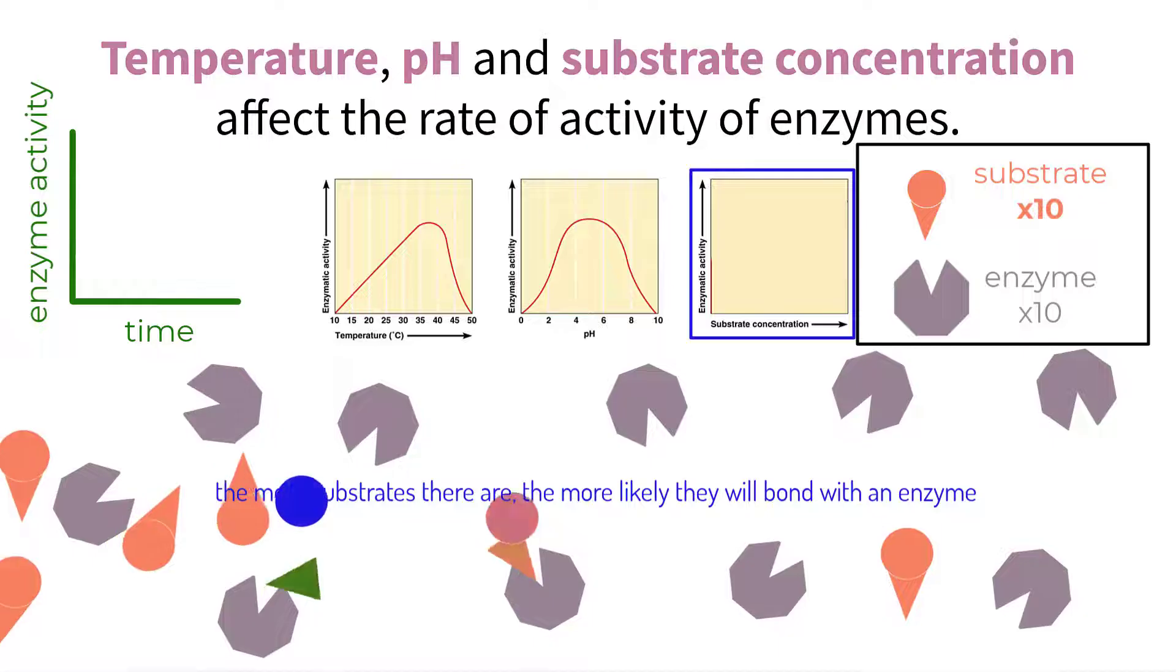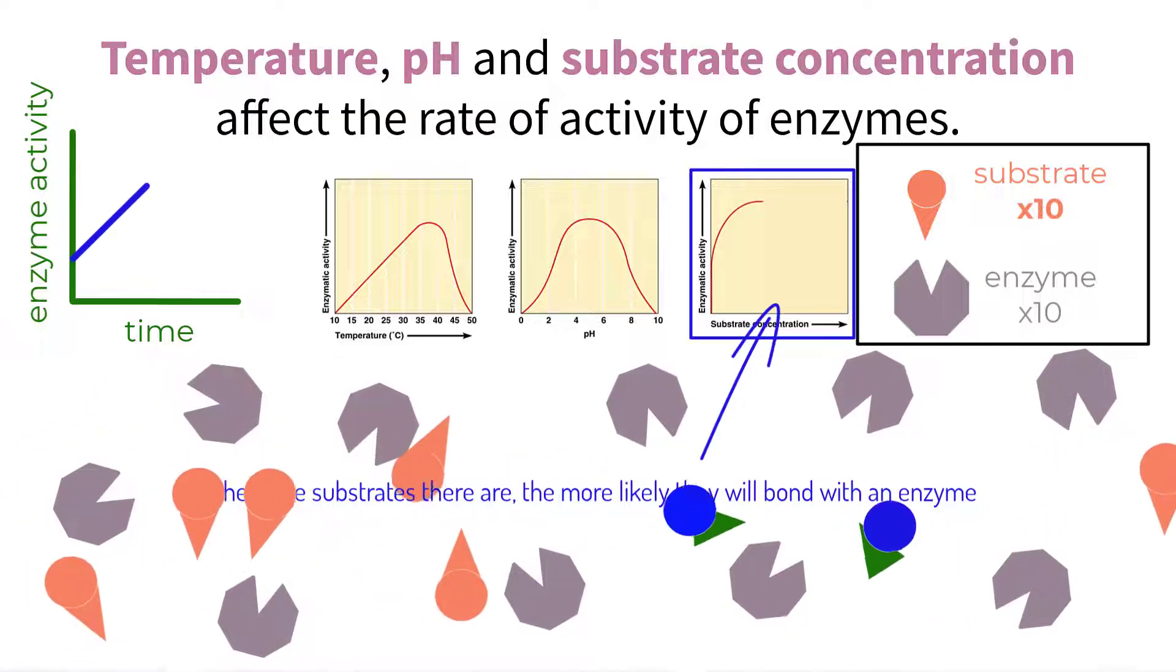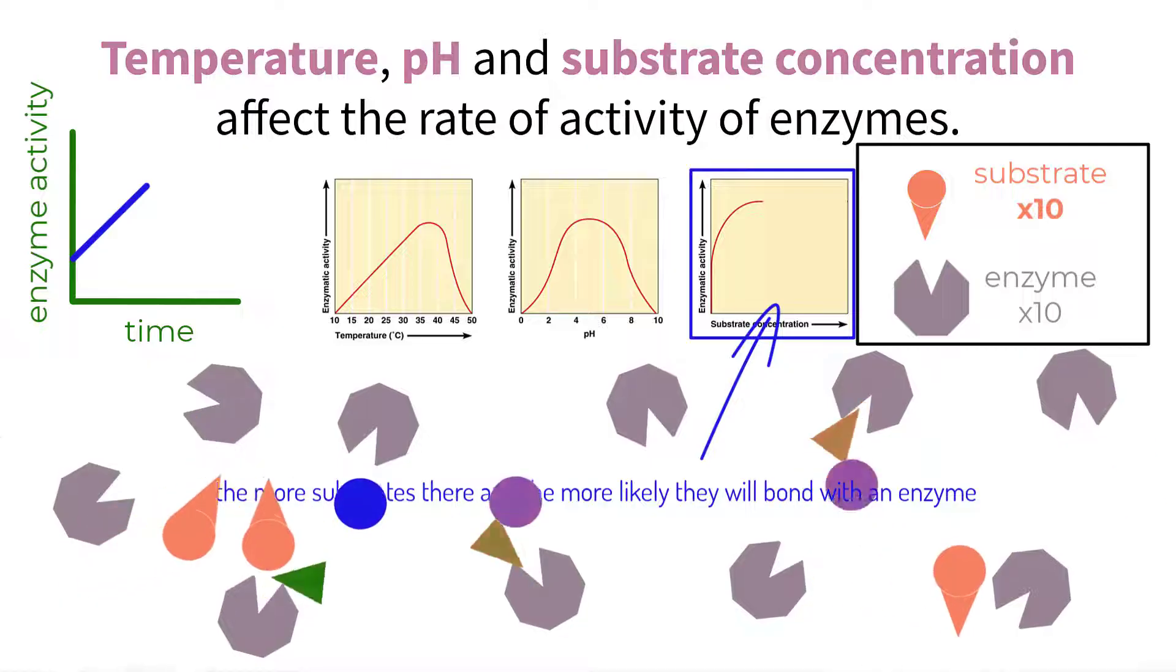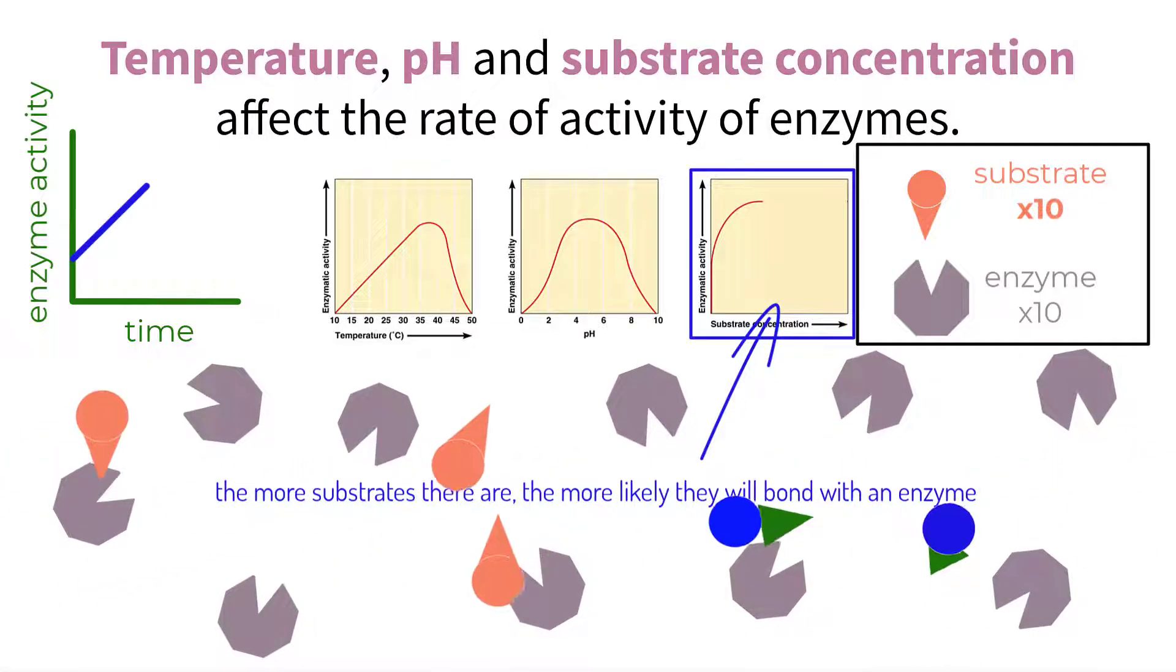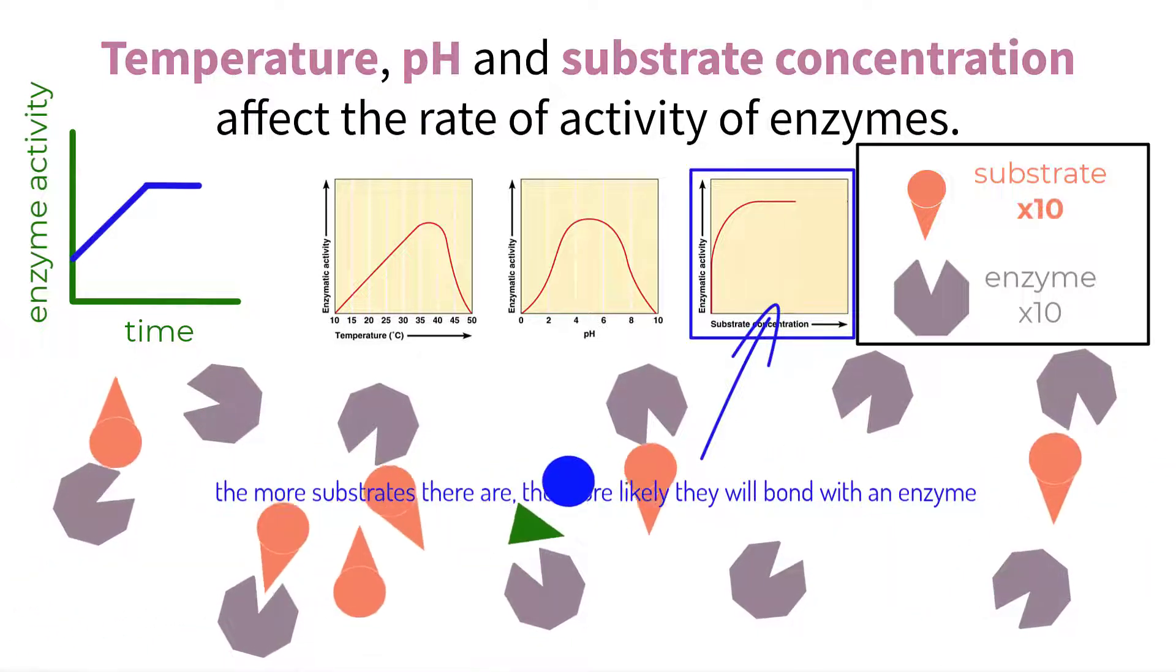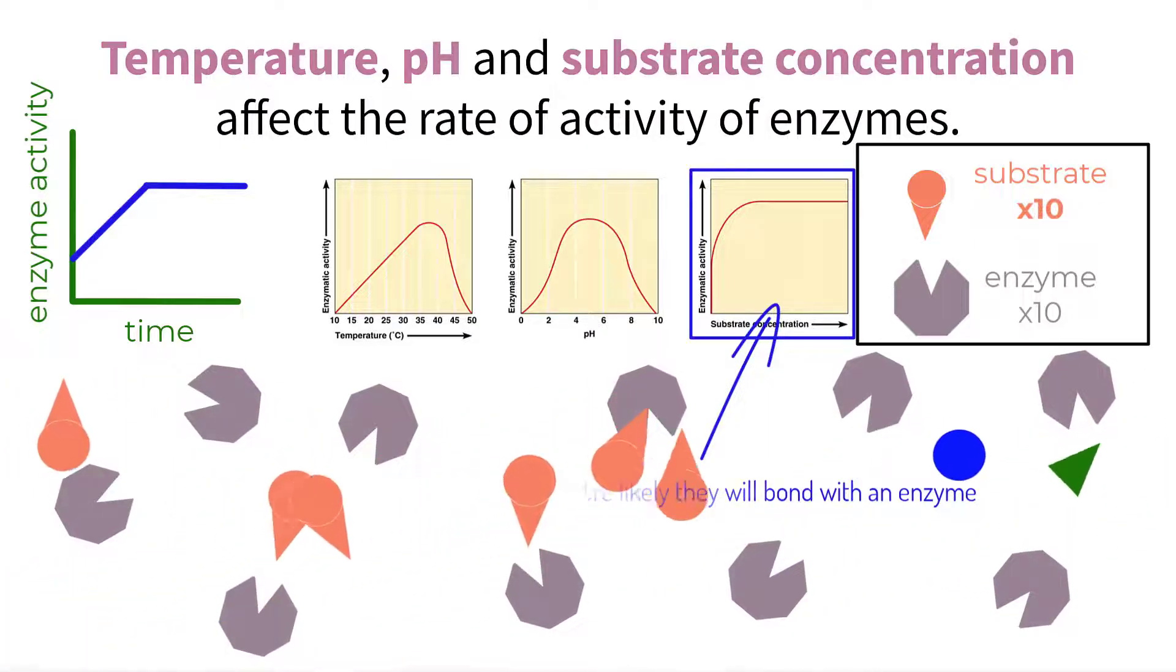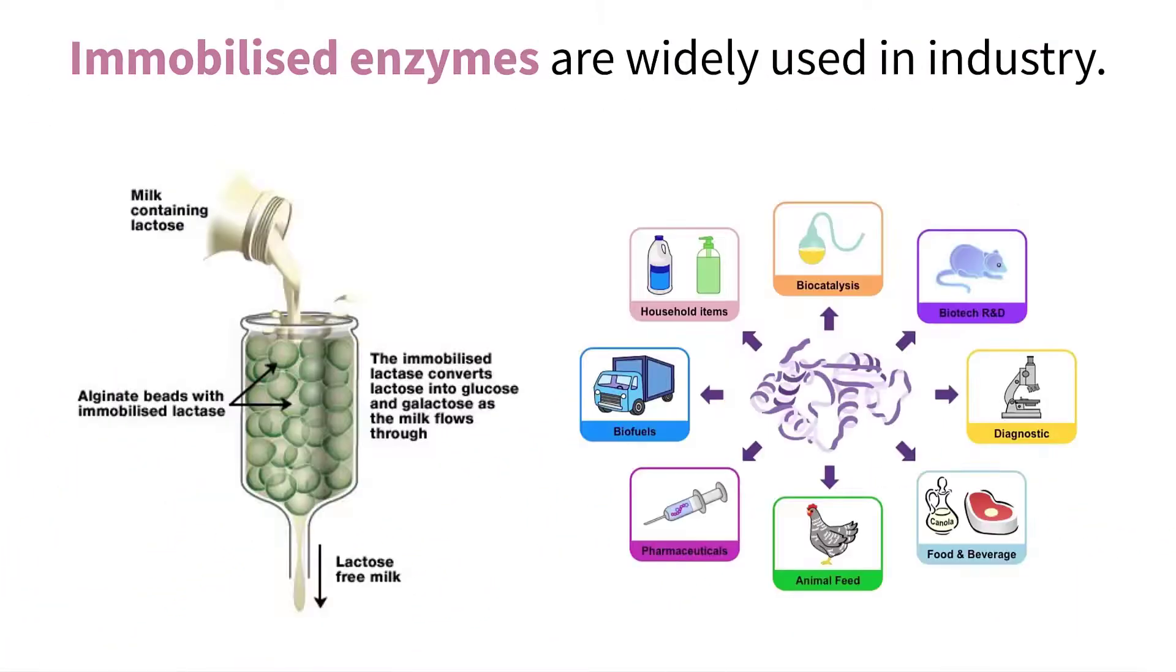So increasing the substrate concentration can greatly increase the overall rate of the enzyme activity, but only to a maximum point. If we were to add five more substrates per five seconds to this example, we can see that the substrates now outnumber the available enzymes. With every enzyme being used, the rate of activity will stagnate because of the limiting factor, so the graph is best drawn like this.